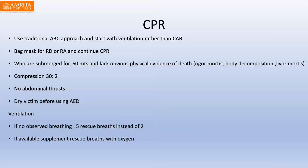For CPR in drowning, unlike the 2010 CAB approach, the traditional ABC (airway, breathing, circulation) should be used here because the primary cause is airway and breathing compromise. Start ventilation rather than circulation. Continue CPR for those submerged up to 60 minutes without obvious physical evidence of death. Compression ratio is 30:2, or 15:2 for pediatrics with more than one rescuer. No abdominal thrust or Heimlich maneuver should be done. Dry the victim before using an AED.